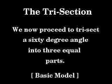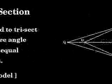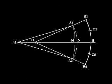The trisection. We now proceed to trisect a 60 degree angle into three equal parts. Step 1. Bisect B1, S for C1 and B2, S for C2. B1, O, B2 is equal to 60 degrees.